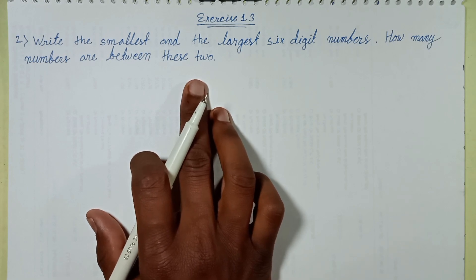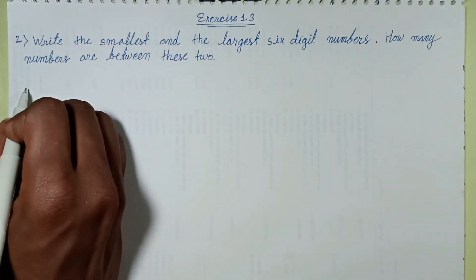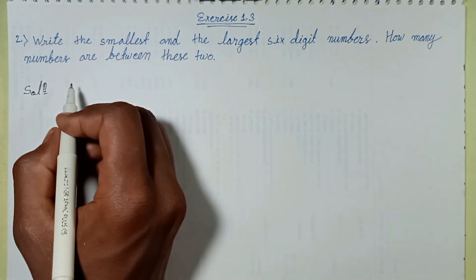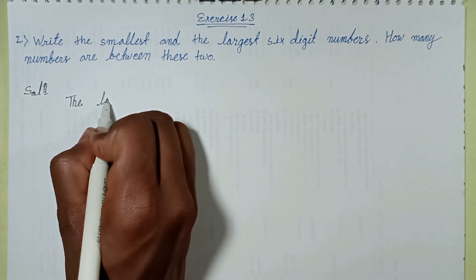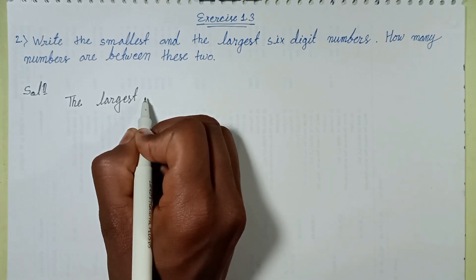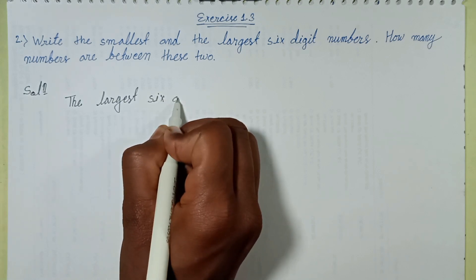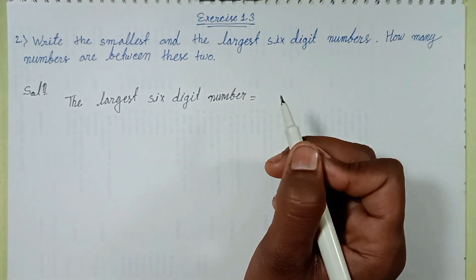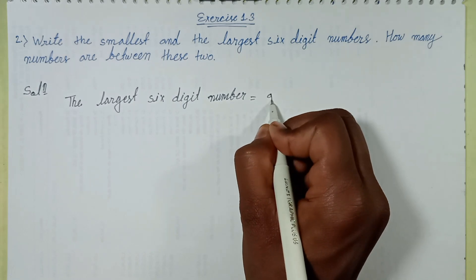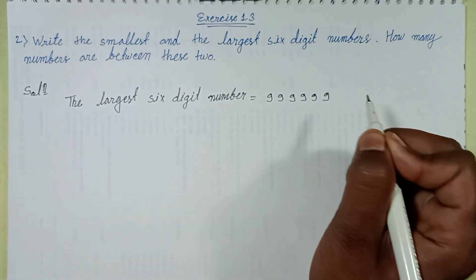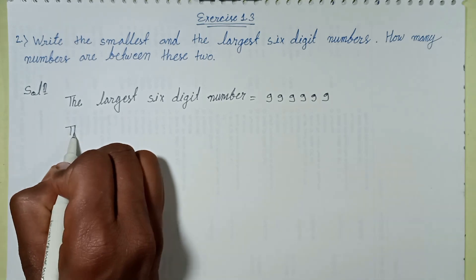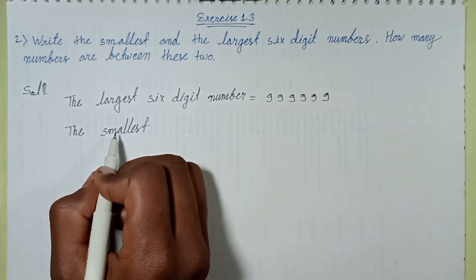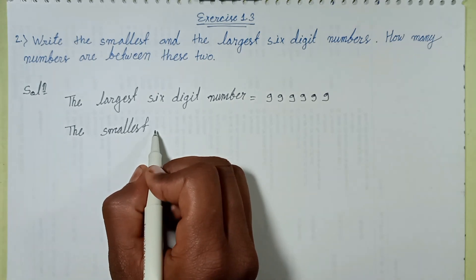Let's solve it. First, write the largest six-digit number. The largest six-digit number has six nines — one, two, three, four, five, six — so it is 999999.